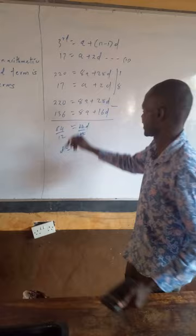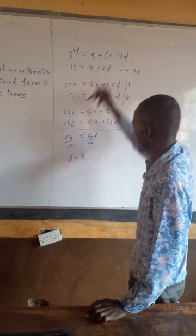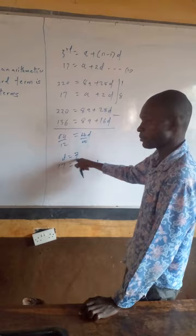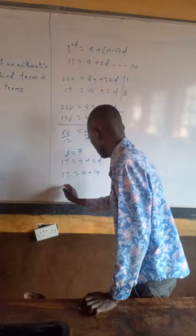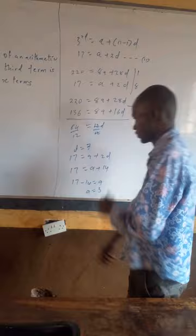We can now find the value of A. We pick equation 2 and say 17 equals A plus 2D. Replacing D with 7, it becomes 17 equals A plus 2 multiplied by 7, which gives 14. So 17 minus 14 equals A, therefore A equals 3.